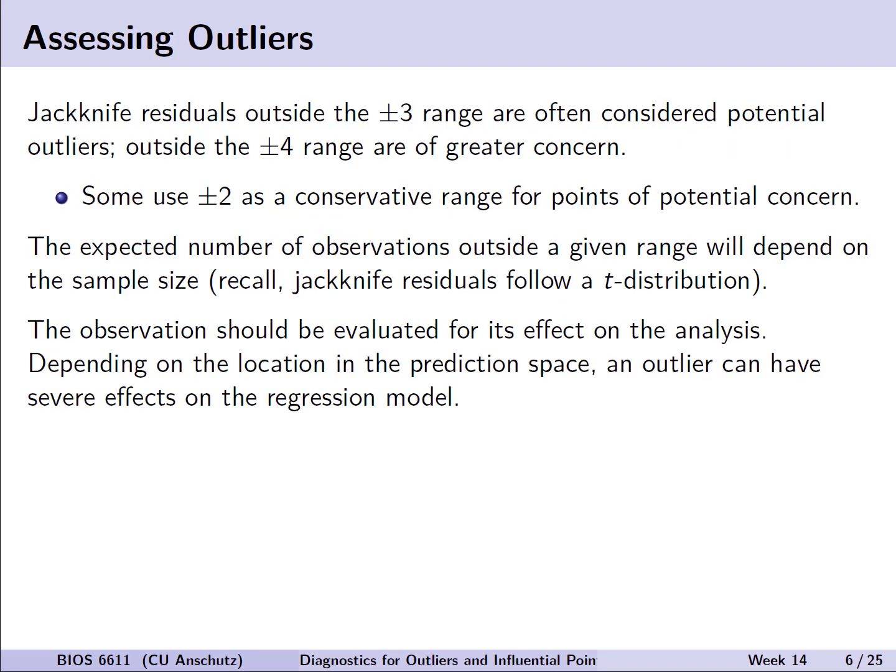Now in practice, we can assess outliers using some of the residuals we've discussed previously. For example, given the properties of jackknife residuals in their standardization, if we have values that are beyond the plus or minus 3 range, that would often be cause for potential concern. And if they're greater than plus or minus 4, it's of even greater concern. Now, more conservatively, some actually use a narrower range of plus or minus 2. Recall the expected number of observations outside a given range will depend on your sample size because these jackknife residuals follow a t-distribution. The observation should be evaluated for its effect on the analysis, and depending on its location in the overall prediction space, an outlier could have severe effects on the regression model.